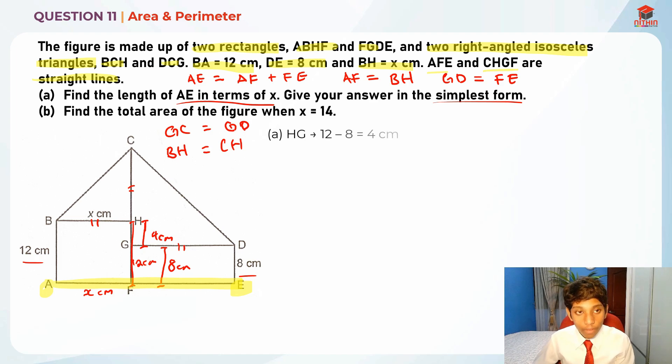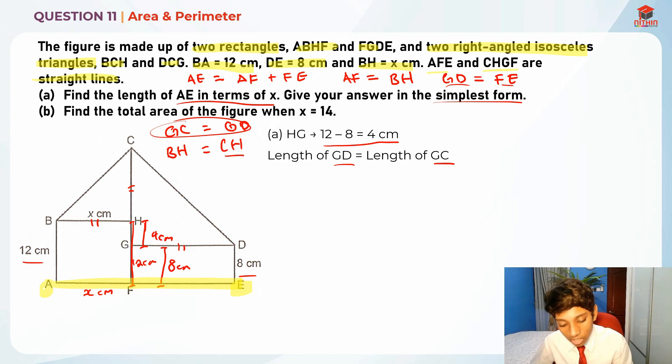First, we need to find HG, which we already know is 4 cm because we're taking 12 cm minus 8 cm. Next, the length of GD is equal to the length of GC because it's an isosceles triangle. GD is equal to FE, which helps solve our question. Since we know that BH is equal to CH, CH is also x cm. GC is equal to x plus 4 cm, and thus GD is equal to x plus 4 cm, which means FE is also x plus 4 cm.